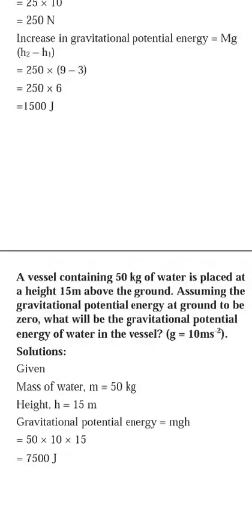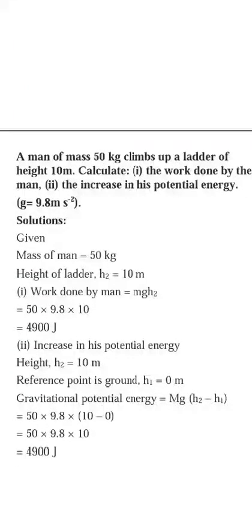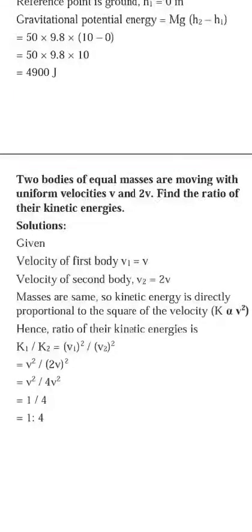A man of mass 50 kg climbs a ladder of height 10 meters. Calculate the work done and the increase in potential energy. Work equals energy, so I use mgh: 50 × 9.8 × 10 = 4900 joules. The increase in potential energy is the same value — 4900 joules — because work done equals the gain in potential energy.